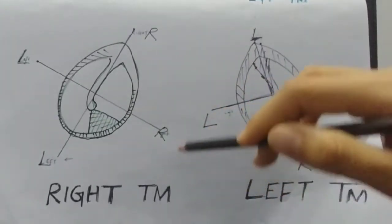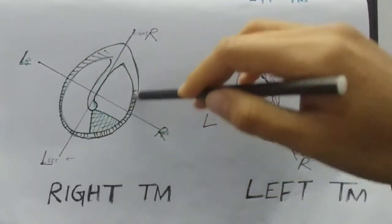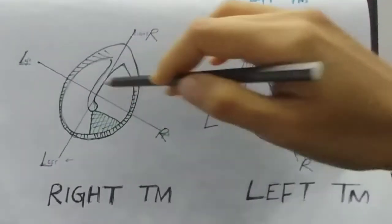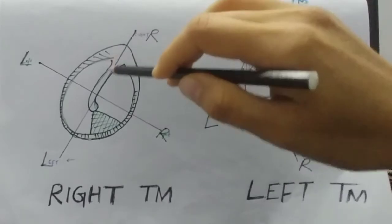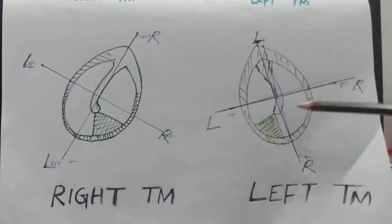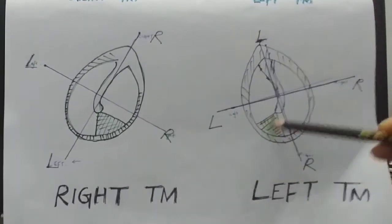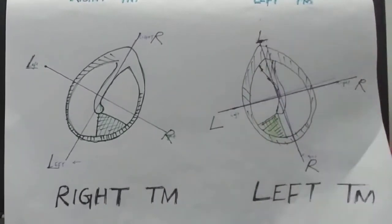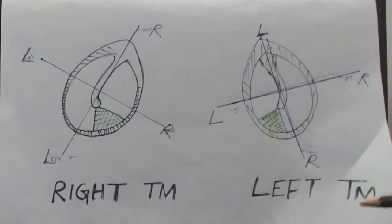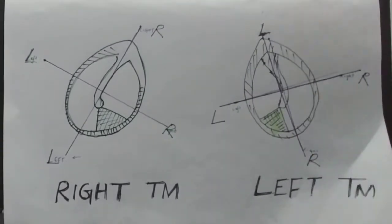The parts are: the annulus, cone of light, umbo, handle of the malleus, pars tensa, pars flaccida. Same for the left — here the cone of light is towards the left side, umbo, handle of malleus, and so on.